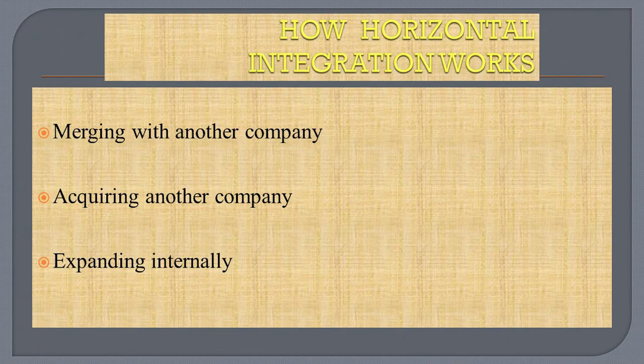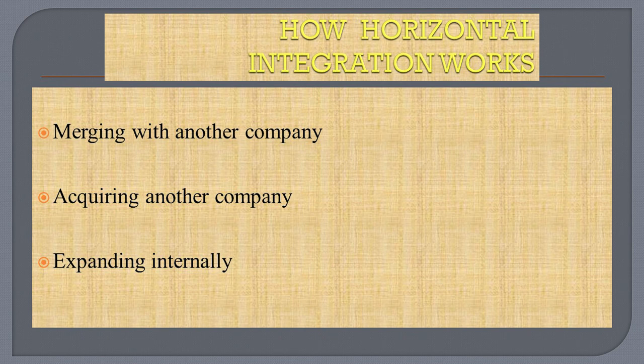Now we will understand how horizontal integration works. Horizontal integration works in three categories. First, merging with another company — when two companies merge, two separate entities create a new joint organization. After that, acquiring another company — an acquisition occurs when one company outright takes over the operations of another company. And finally, a company expanding internally — a company chooses to strategically change course and apply more resources in a different way.